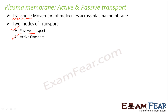Passive transport includes diffusion and osmosis — whatever we have discussed so far. Passive transport means the cell doesn't need to spend any energy for the movement of molecules across the plasma membrane. The movement happens on its own due to the difference in concentration, for example water flowing out of the cell in a hypertonic solution.